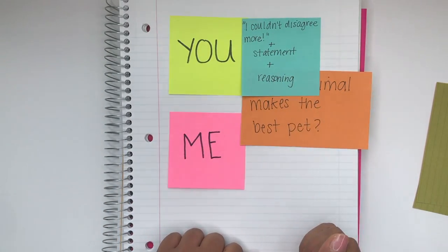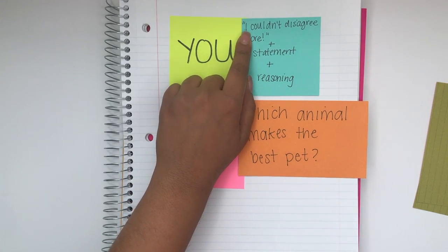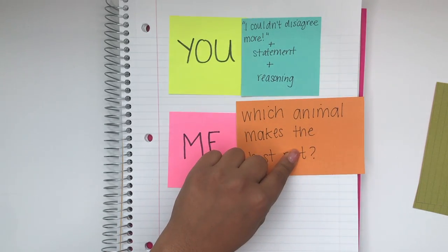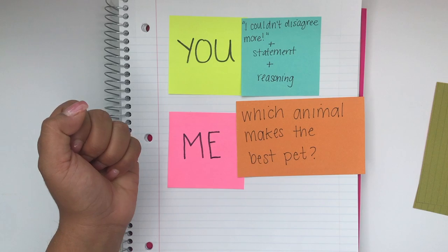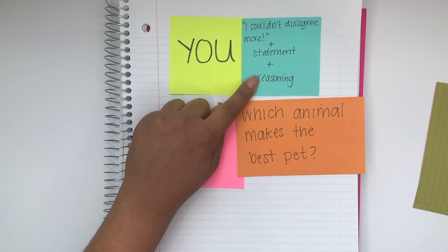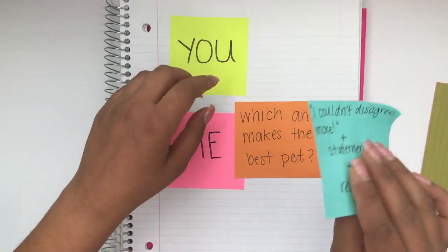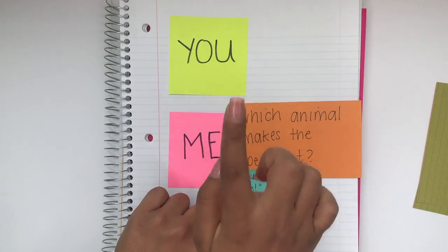The first student also disagrees, providing a statement and reasoning to support it. They might say: I couldn't disagree more. The question is what makes the best pet, and pets are companions. Tell me the last time your cat snuggled up to you and loved you as much as a dog — they just don't fit the criteria. And as you may have guessed, it's then the other student's job to disagree with that statement.